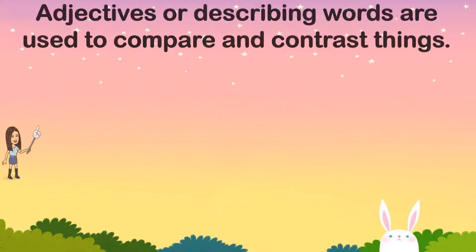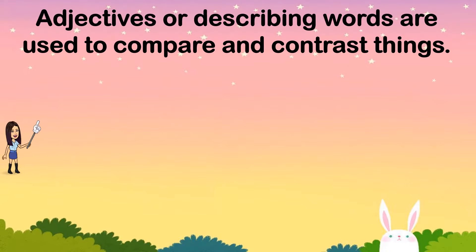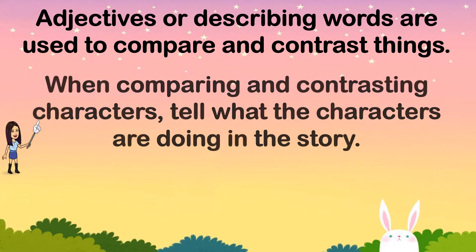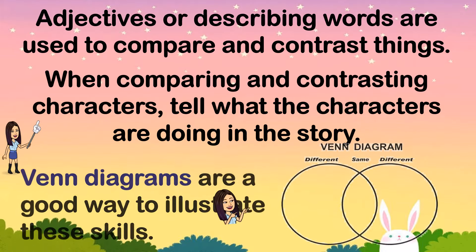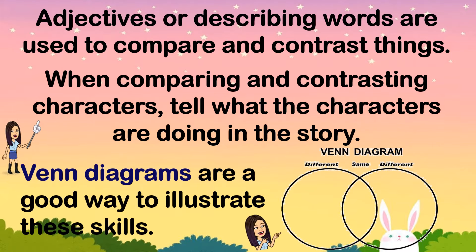Adjectives or describing words are used to compare and contrast things. When comparing and contrasting characters, tell what the characters are doing in the story. Venn diagrams are a good way to illustrate these skills.